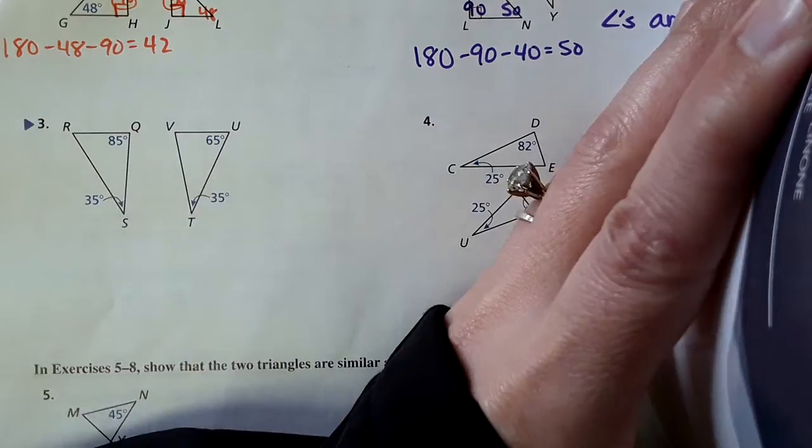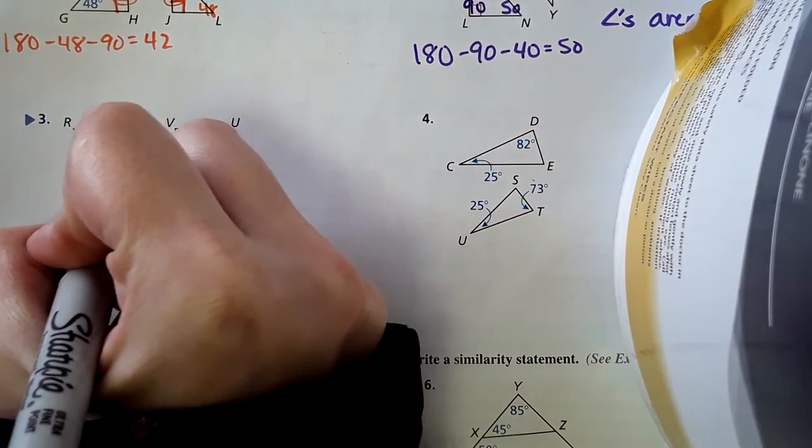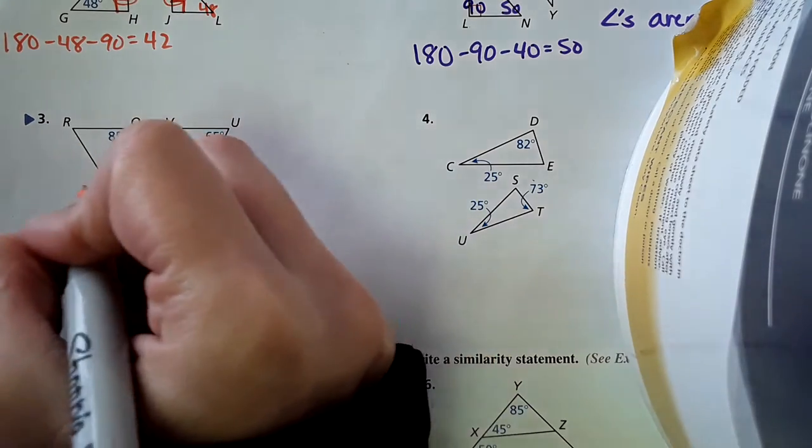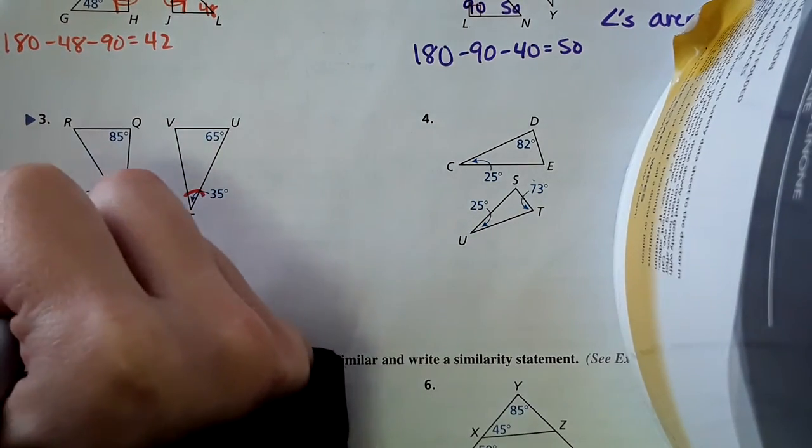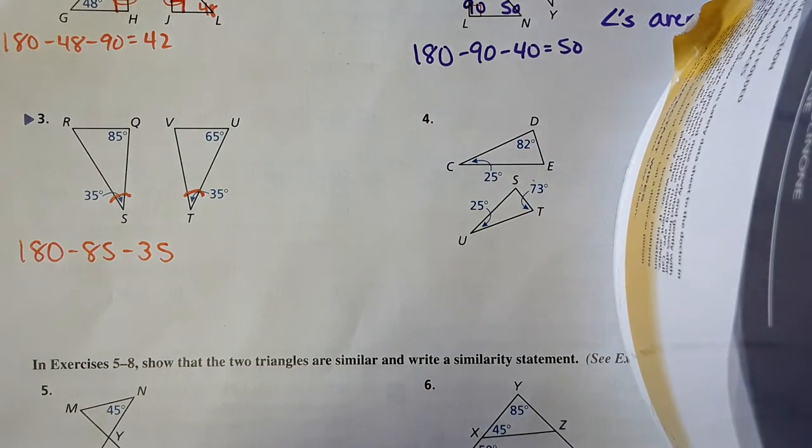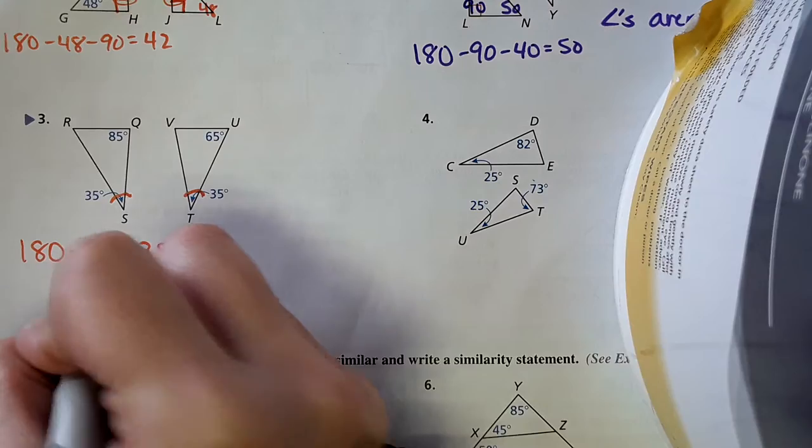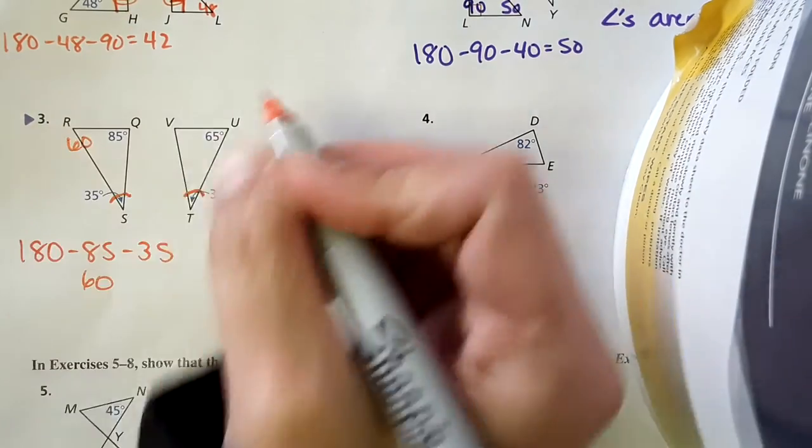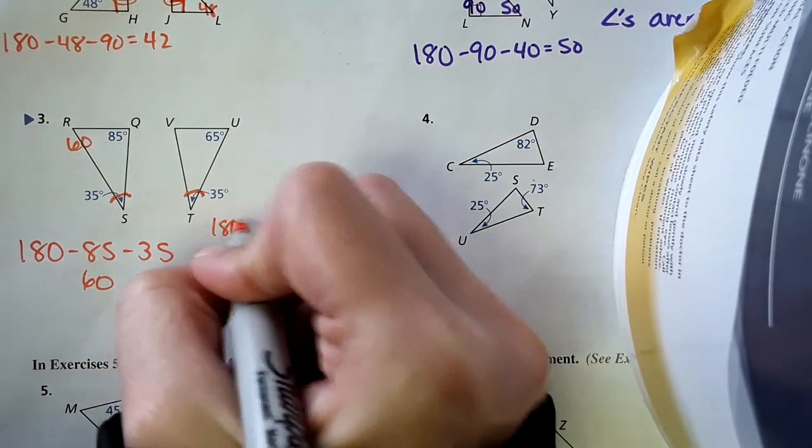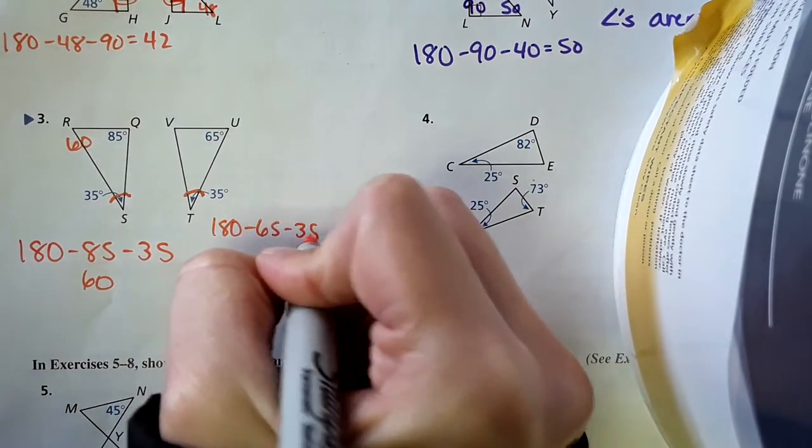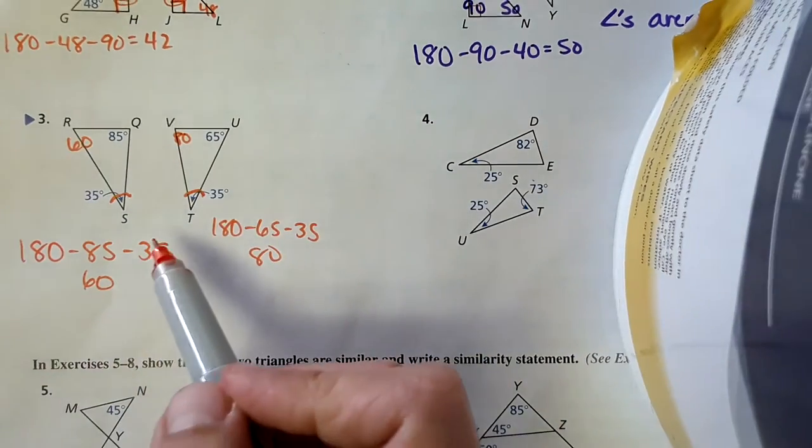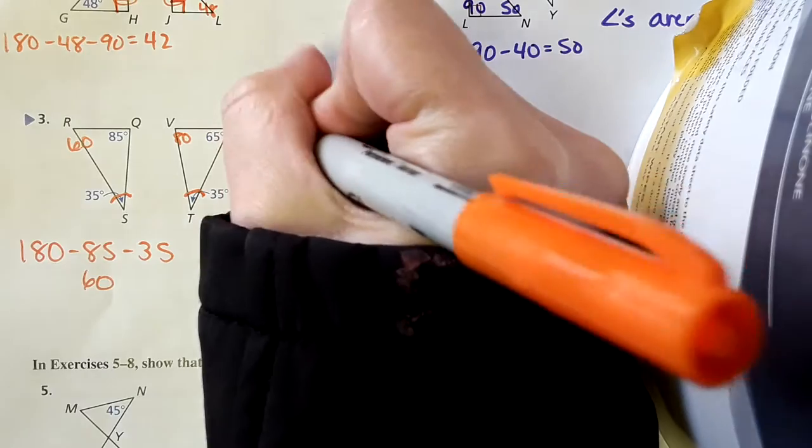Number three. Cool. They tell me that this is equal to this. One down. I need to figure out this third angle to see if there's another angle that matches. 180 minus 85 minus 35. IDK, what is that? It's 60. Uh-oh. Nothing matches. If I were to do this over here, 180 minus 65 minus 35, it comes out to 80. Nope. These angles don't match. No buenos. Not similar.